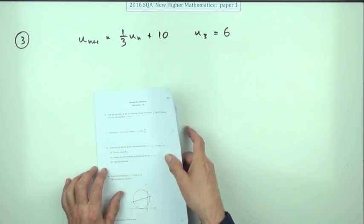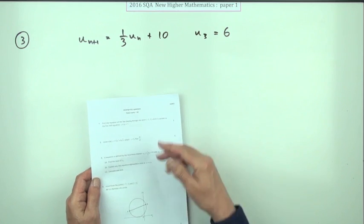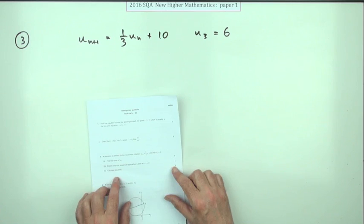Question 3 from the 2016 New Higher Maths Paper 1, a recurrence relation, look at that, 4 marks, couldn't get easier.